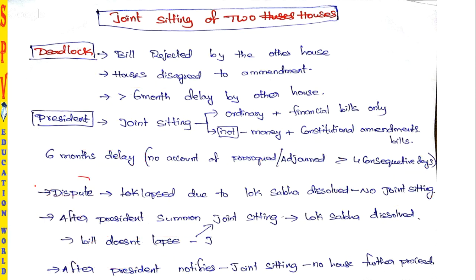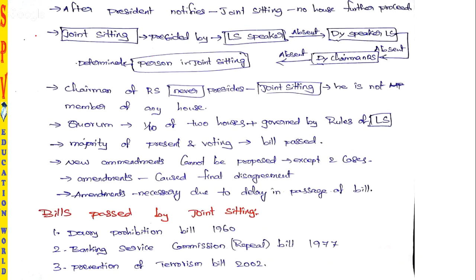After the President notifies for joint sitting, there are no further proceedings of the bill in either house. Both houses must stay silent. Once the President announces joint sitting, no other house can further proceed regarding the bill — wherever the bill is or whatever stage it is at, it ends there, and the house goes silent regarding that bill.